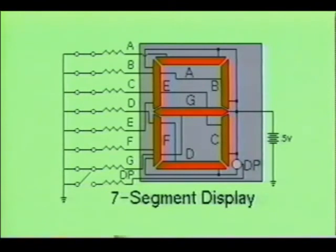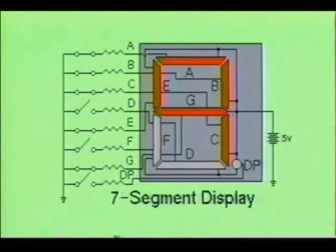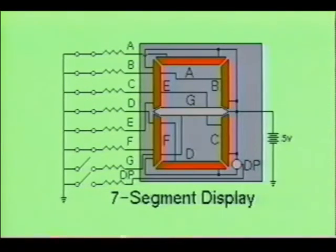Decimal number 8 is displayed when all of the segments except DP are activated. And decimal 9 is displayed when segments A, B, C, E, and G are energized. We can also display the decimal 0 by turning on segments A, B, C, D, E, and F.